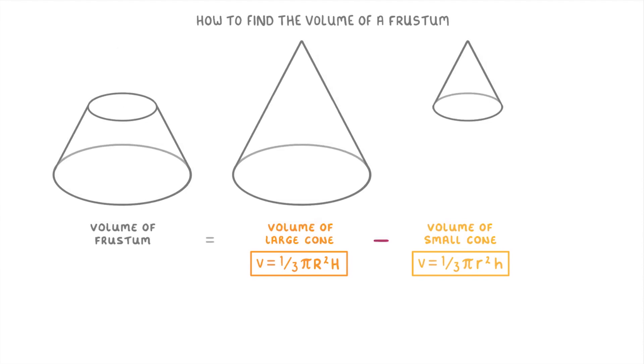To see this in practice, let's give our frustum some numbers and try to calculate its volume. Looking at our formulas, the variables that we need to find are the radius and height of the large cone and the radius and height of the small cone.